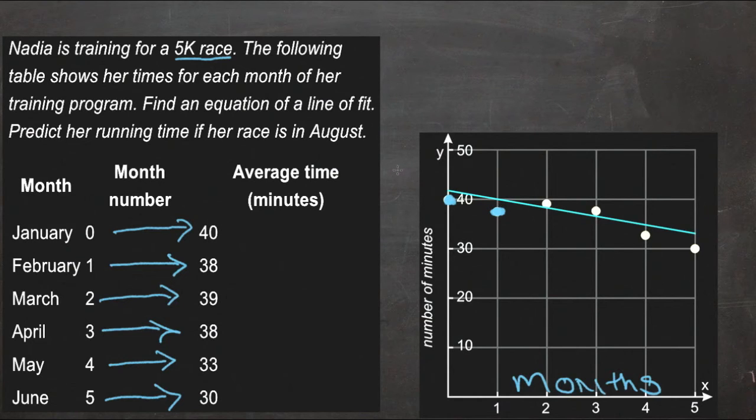This line that I've sketched in here is just sort of an estimate of the average of all those times. So what we need to do is find the equation of this line right here. We can see that it goes through at this point up here, which is 0, 42, and it also goes through, looks like, 4, 34, so we'll use this one over here.